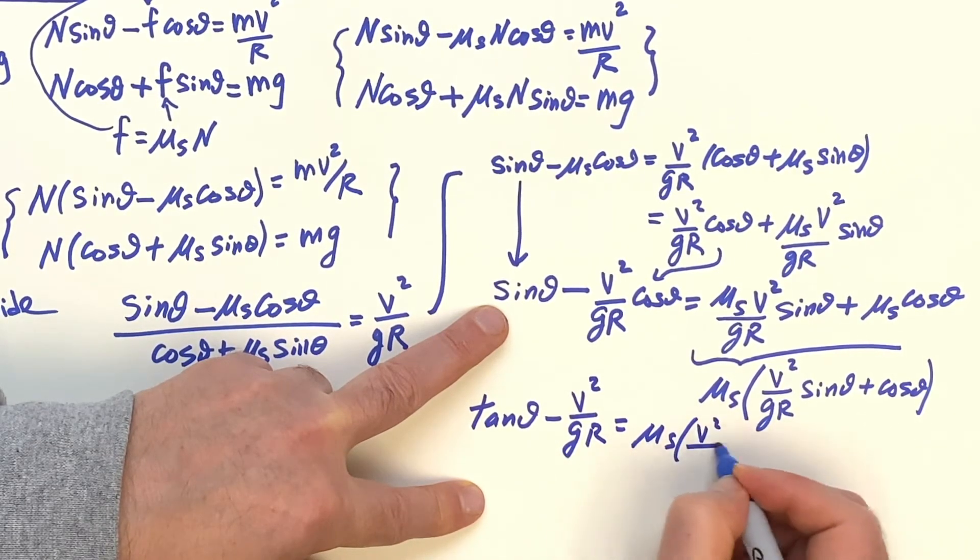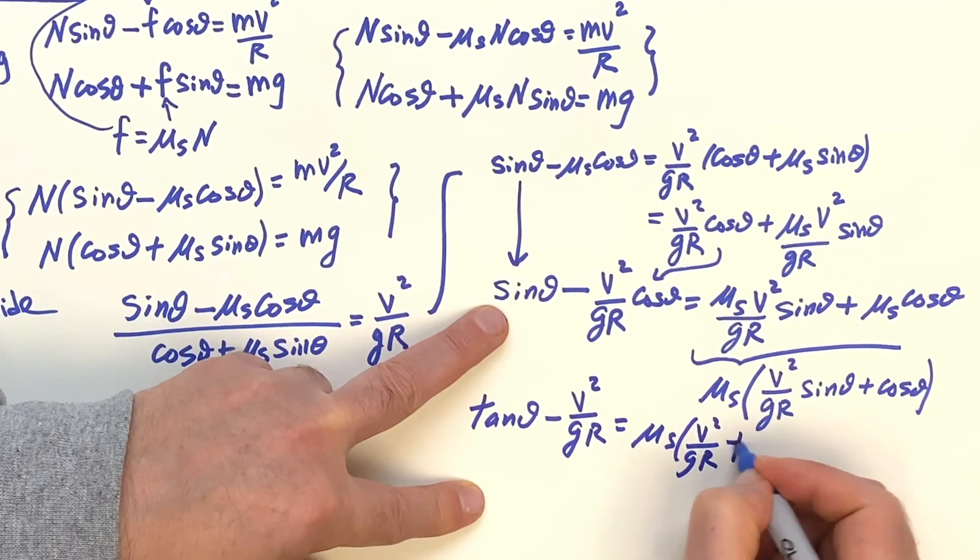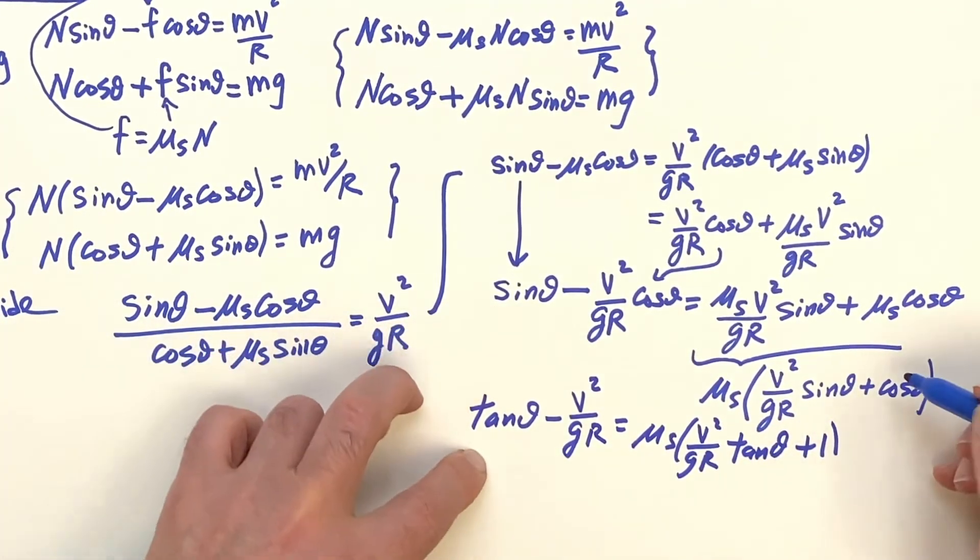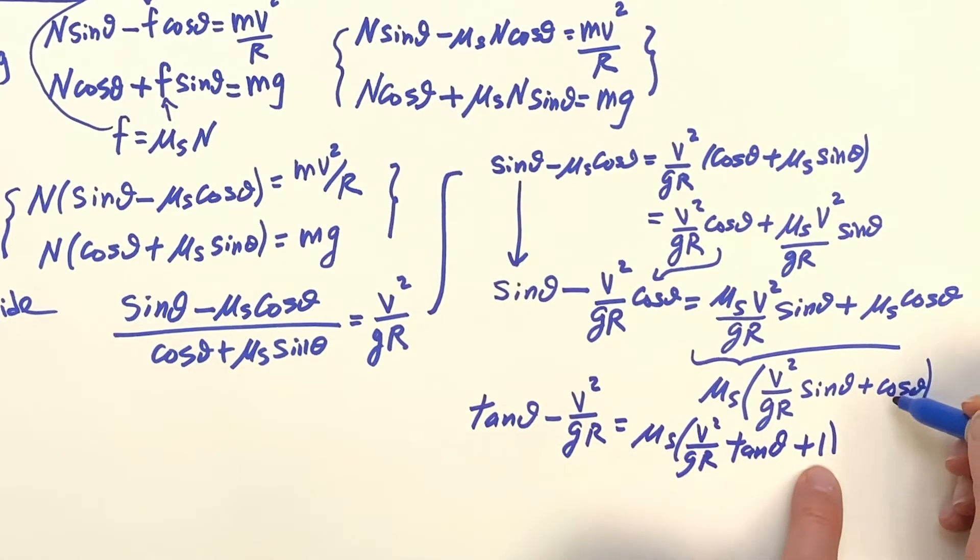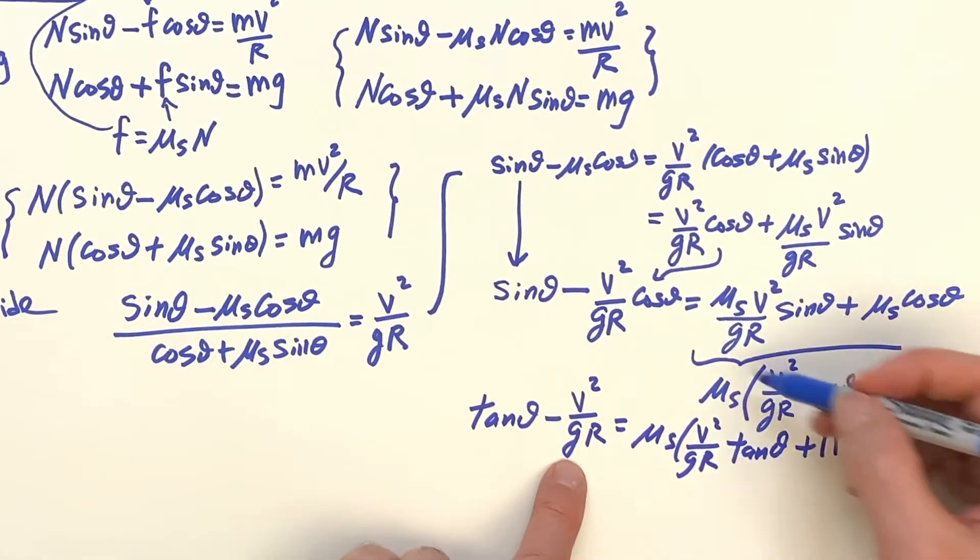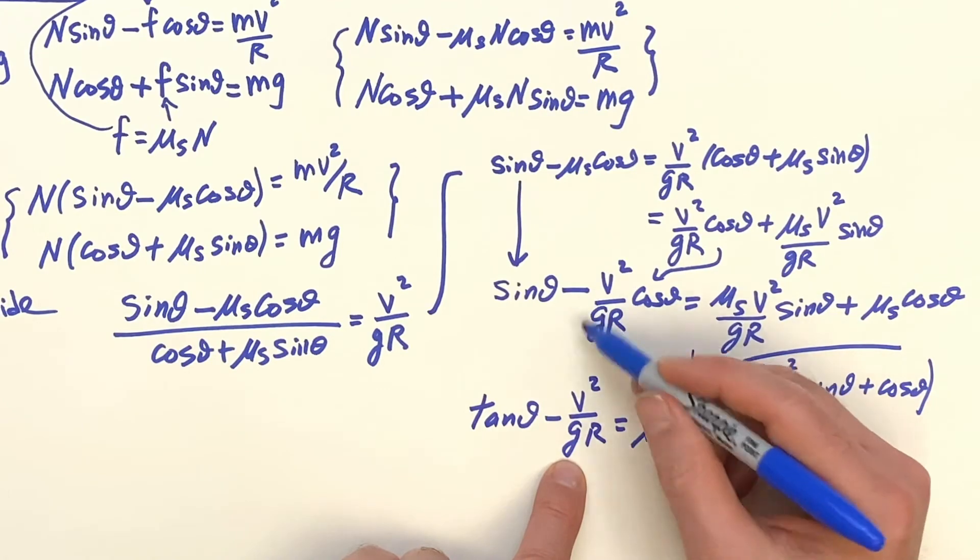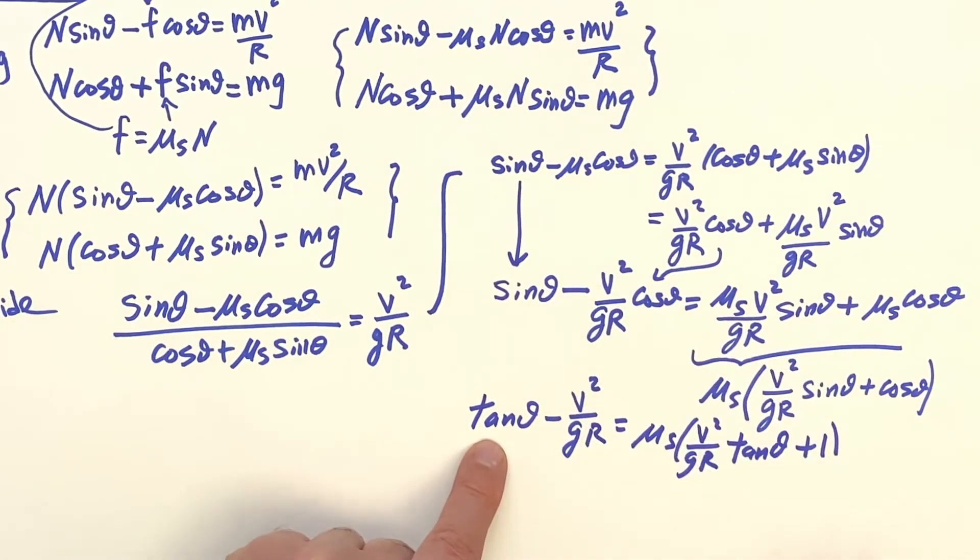And over here, I'll have Mu, S, V squared over G, R, tangent of theta plus one. So I divide it by the cosine of theta. So that gave me a one here, gave me a tangent there, gave me a one here at the minus sign, and it gave me a tangent there.